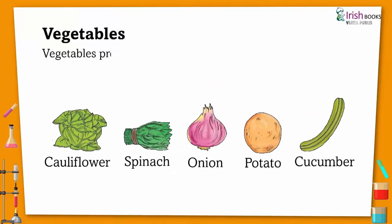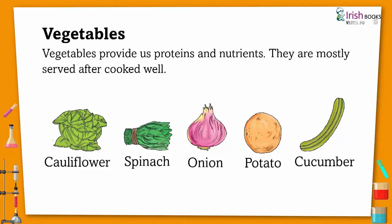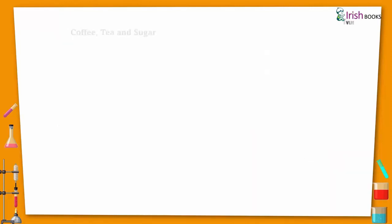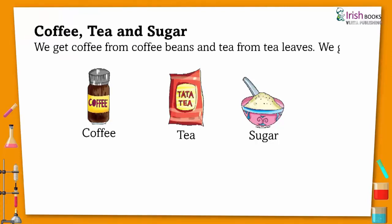Vegetables provide us protein and nutrients. They are mostly served after being cooked well. Vegetables include cauliflower, spinach, onion, potato, and cucumber.